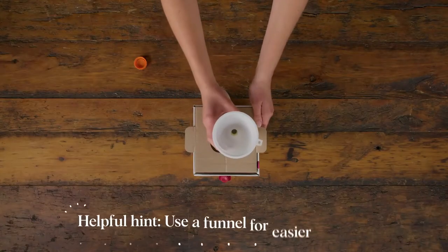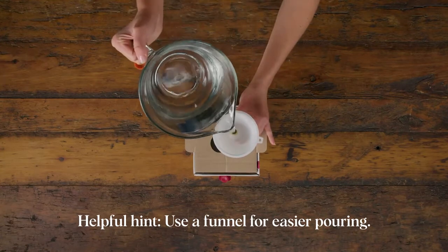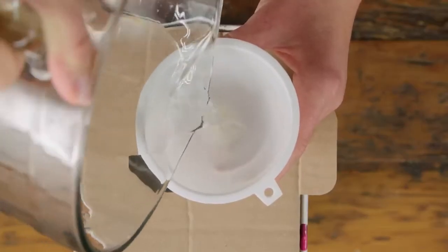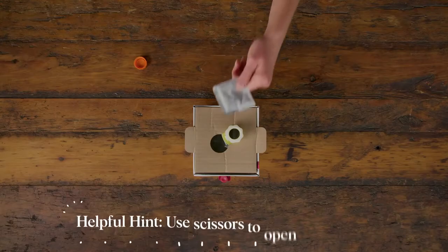Pour 2.54 litres of room temperature water into the bag. That's 10 ¾ cups. Add the bentonite.